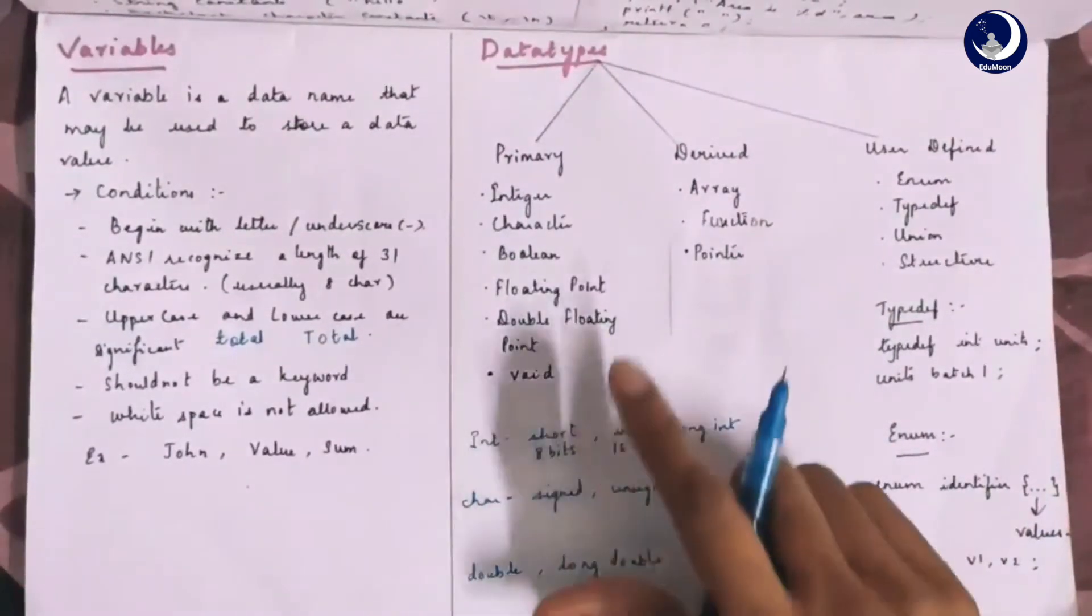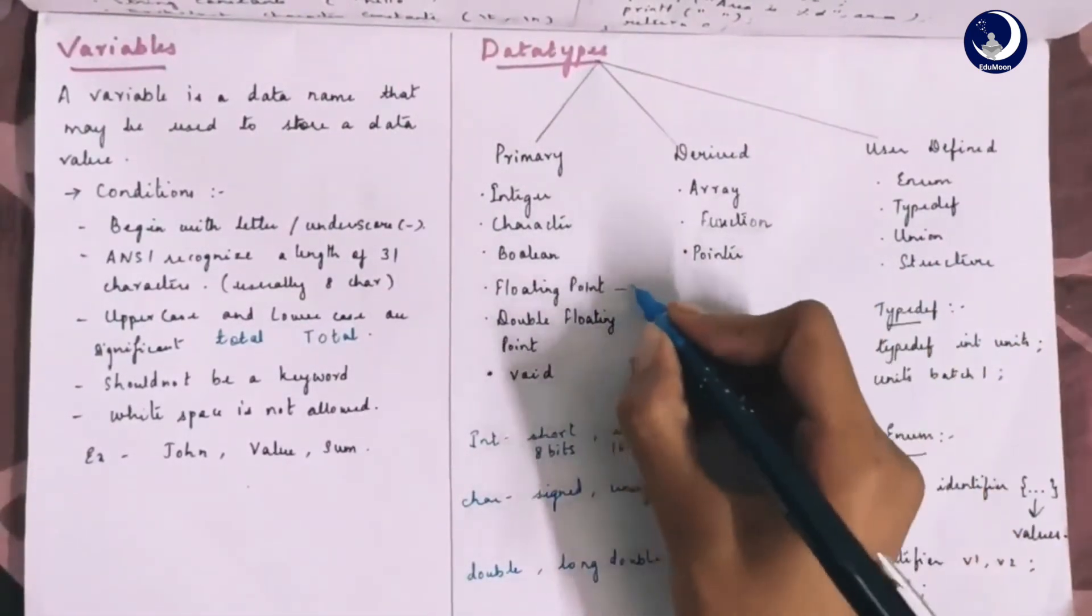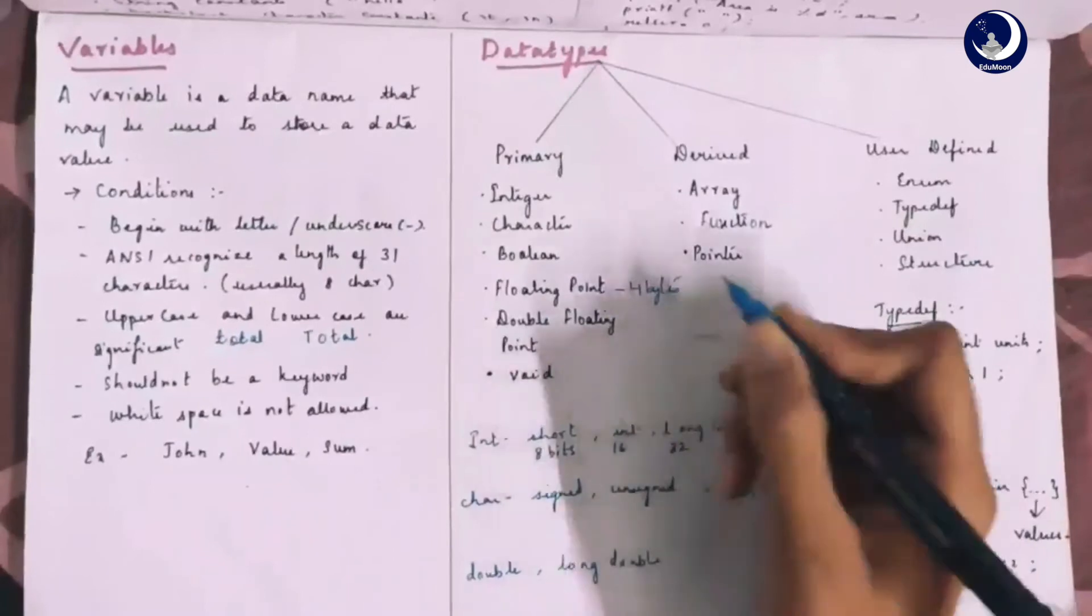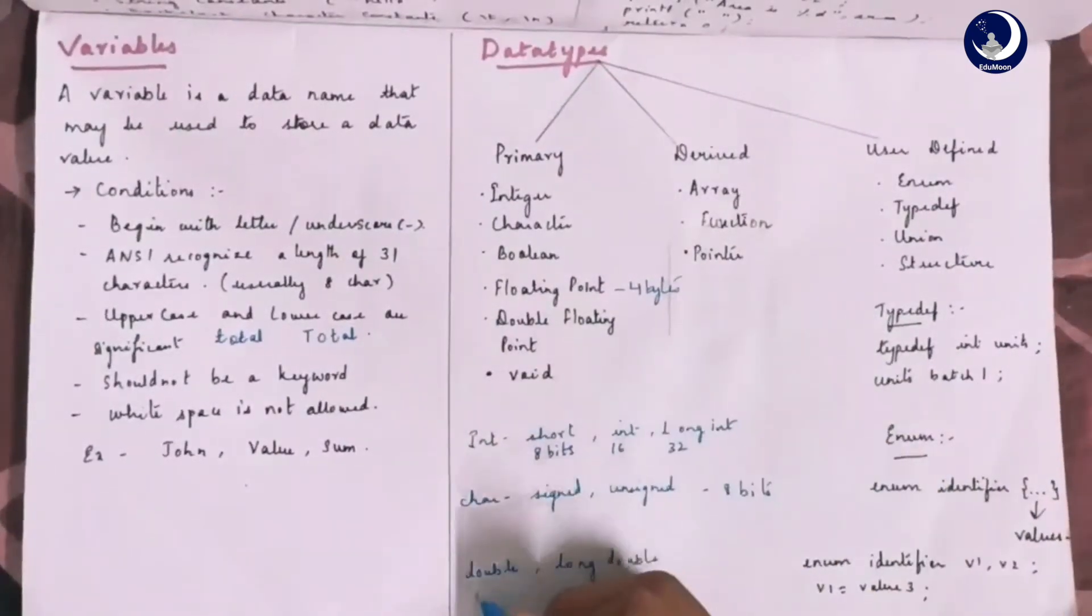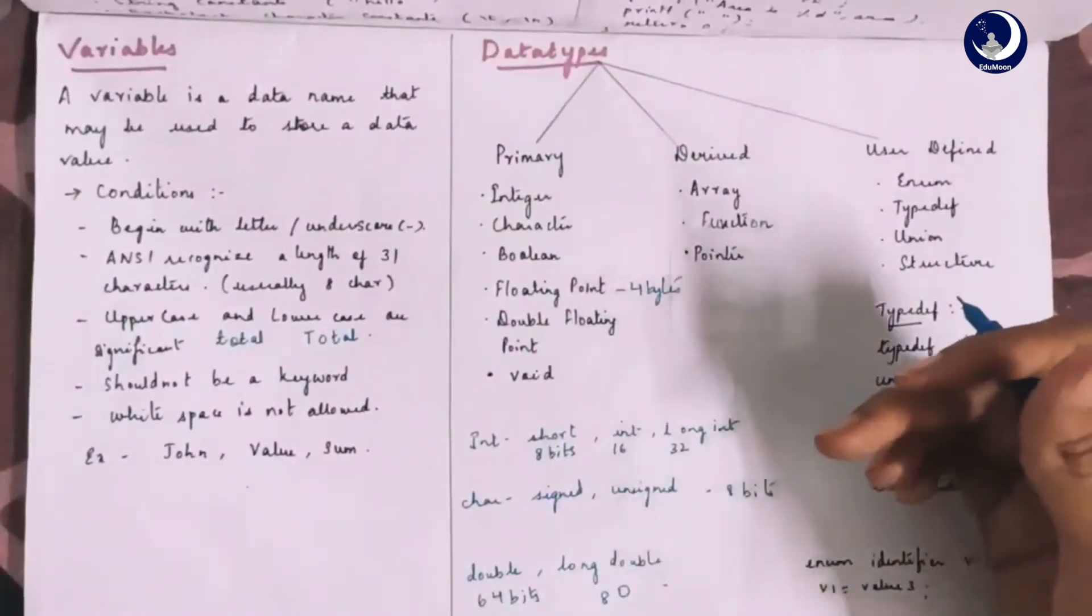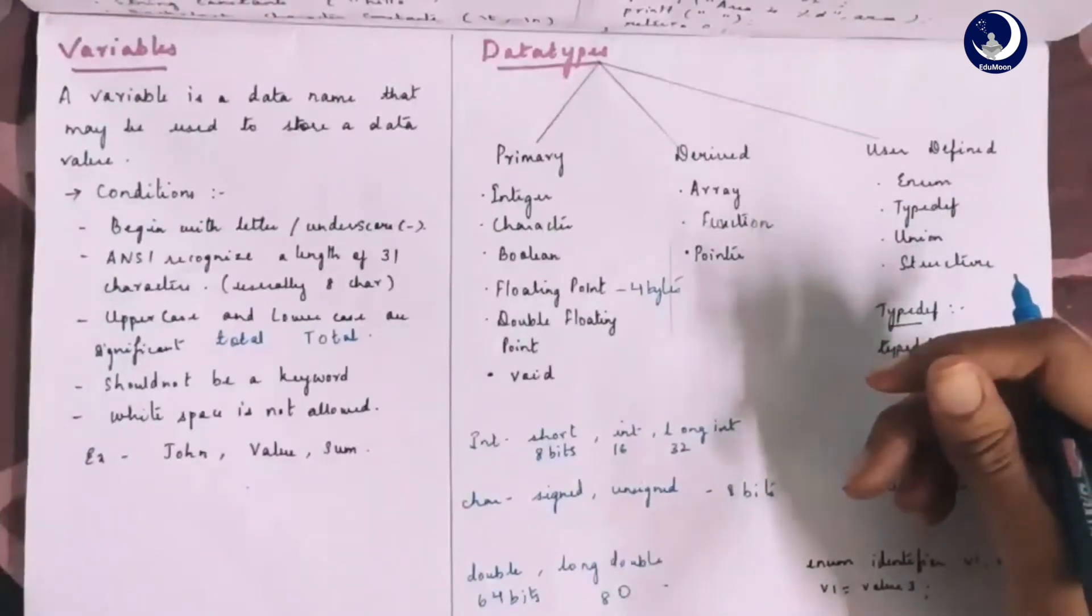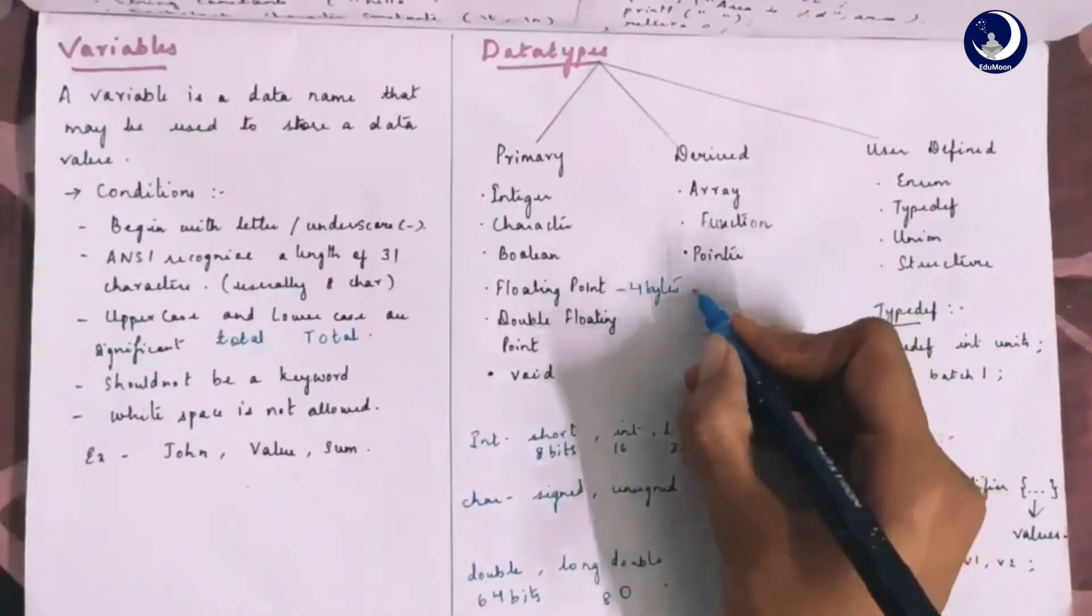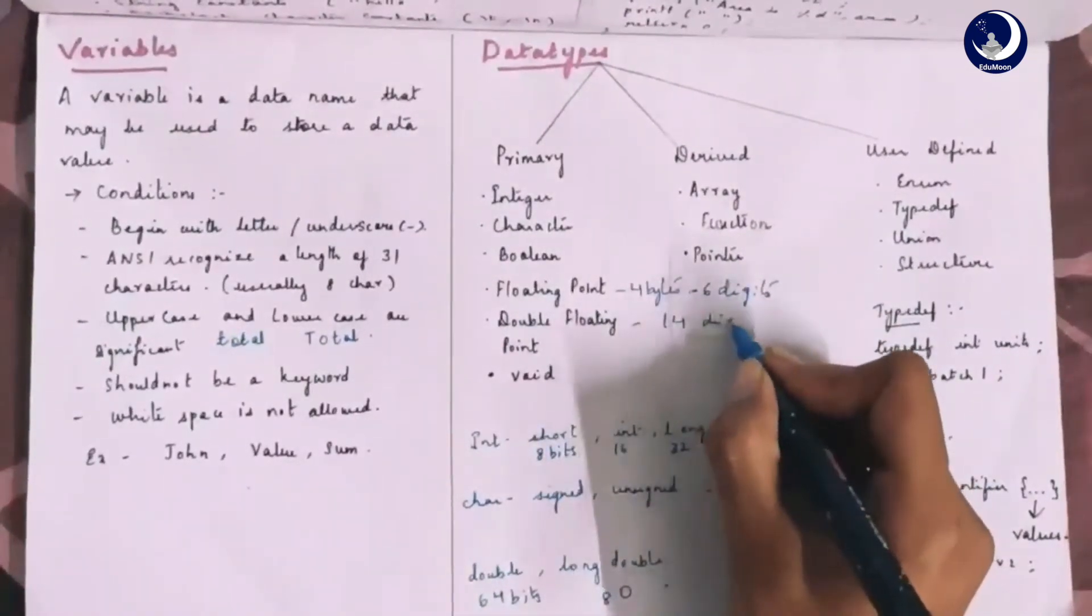Coming to the floating point, we have 32 bits or 4 bytes and that of a double is 64 bits and that of a long double is 80 bits. A floating point or real numbers are stored in 32 bits with 6 digits of precision and double floating point has 14 digits of precision.